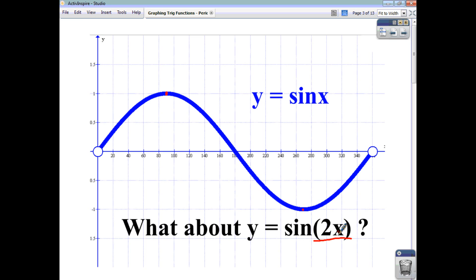So when x is 45, we know that this function is going to take a value of 1, because sine of 90 is 1. So this function has to have a value of 1 when x is 45.